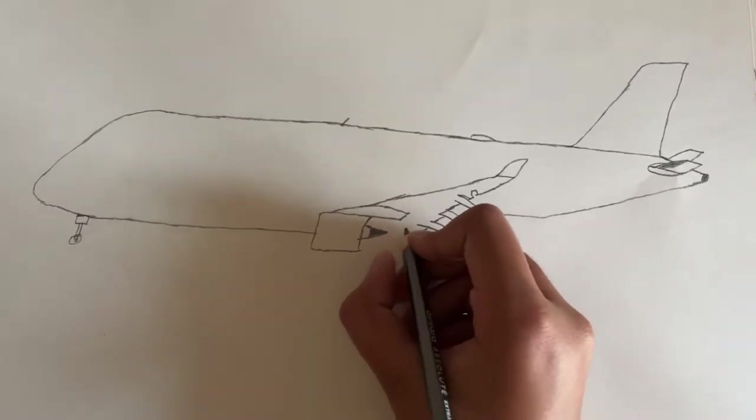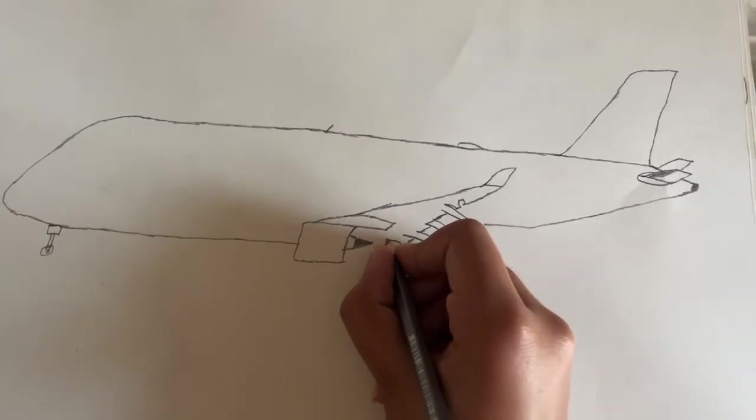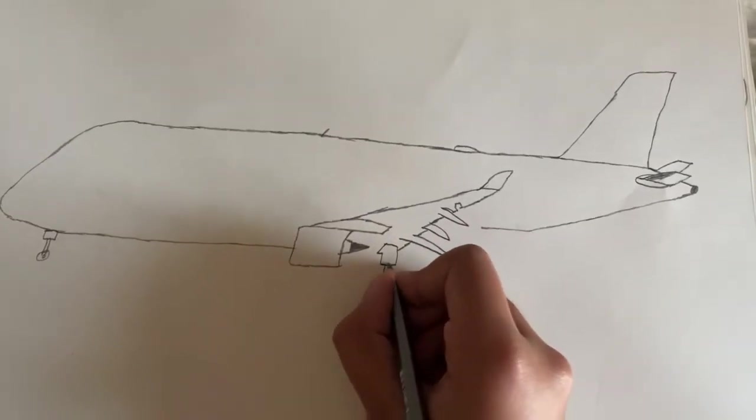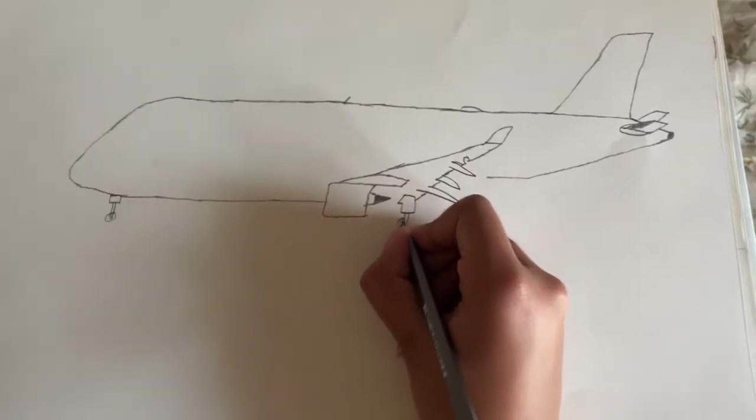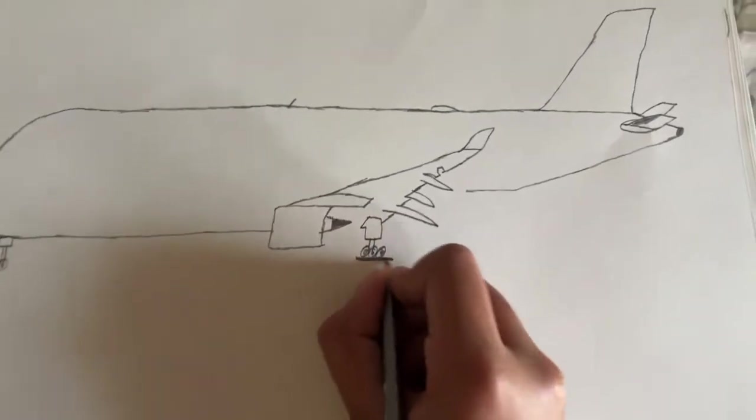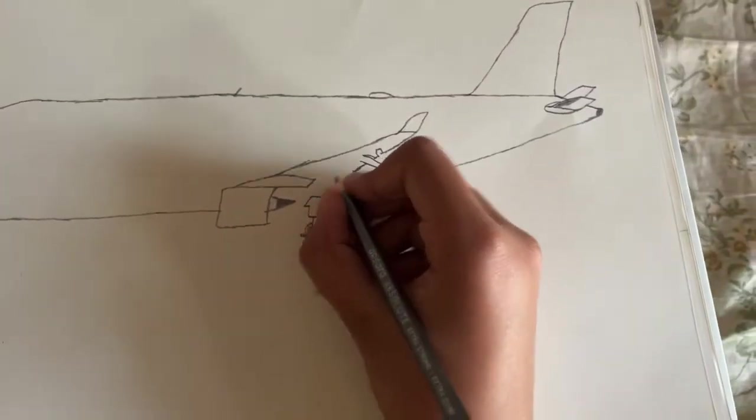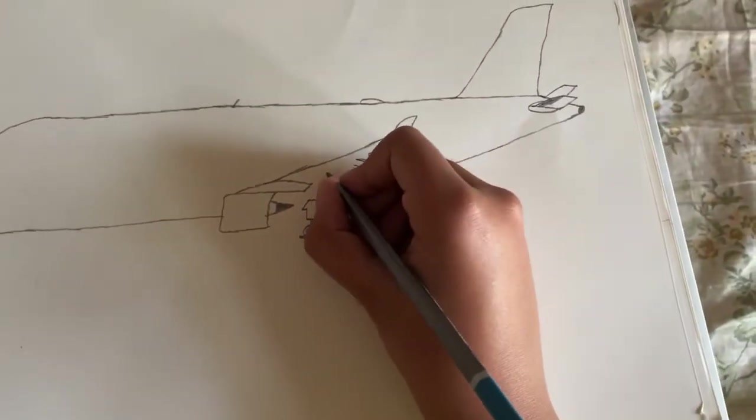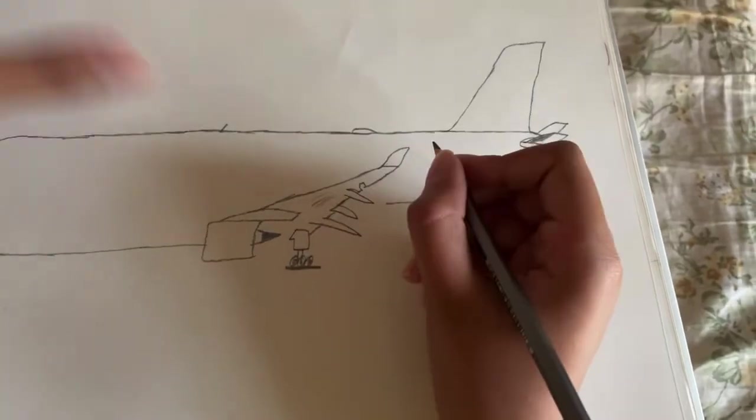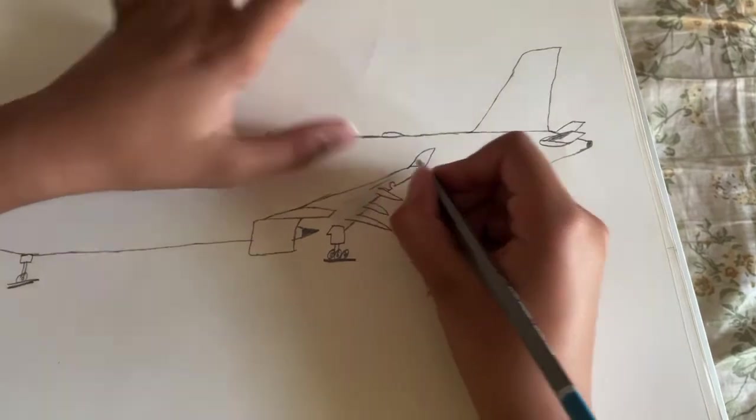And now you draw the rear landing gear. Mark it. And now you do some shading so it will look like a shadow.